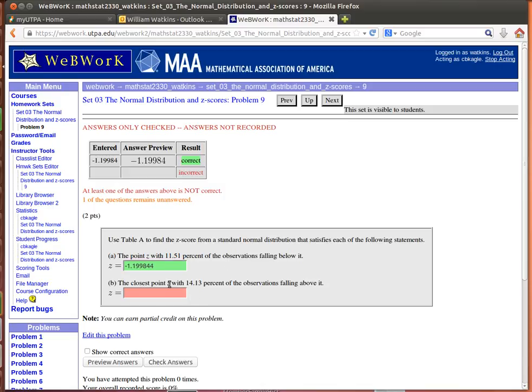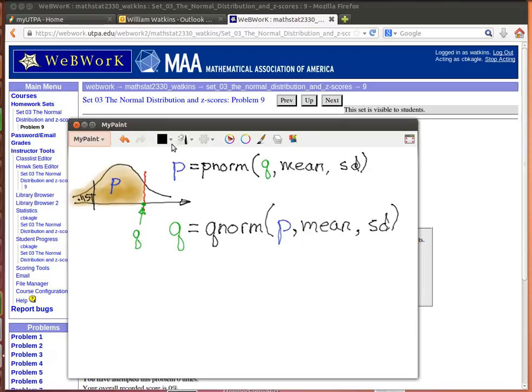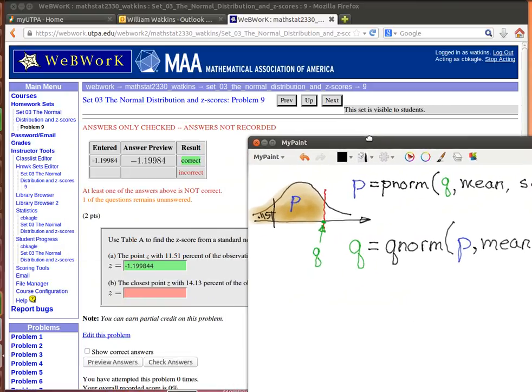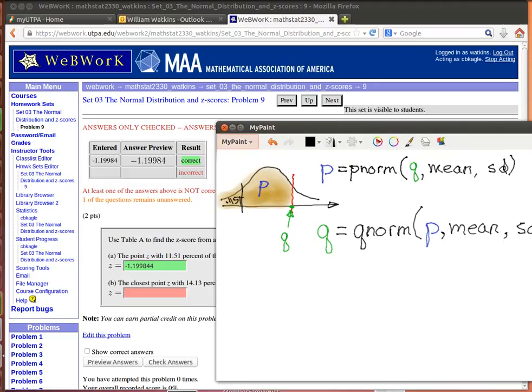The next one is find the closest Z with 14.13% of the observations falling above it. Okay, let's look at our picture for just a minute. If we're looking for 14.13% above, then this might be about the right place because we're looking for .1413 above.